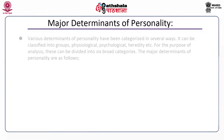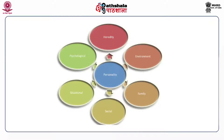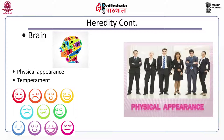Major determinants of personality have been categorized in several ways. They can be classified into groups such as physiological, psychological, heredity, etc. For the purpose of analysis, these can be divided into six broad categories. Number one is heredity — the features and characteristics taken from the parents are termed as heredity.